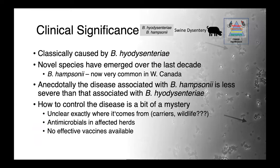Swine dysentery is classically caused by Brachyspira hyodysenteriae, which would have been the predominant species until the mid-2000s. Novel species have emerged over the last decade, and Brachyspira hampsoni is now very common in western Canada — more common than B. hyodysenteriae. Anecdotally, disease associated with hampsoni is less severe than what was classically seen with hyodysenteriae in the 1970s, when much more mortality was associated with these infections.